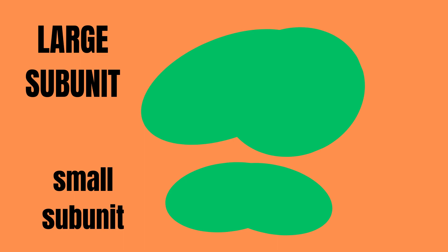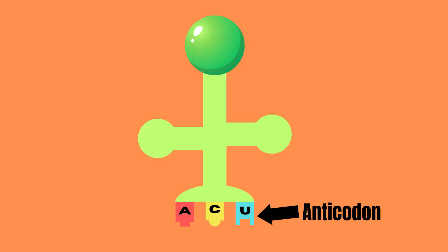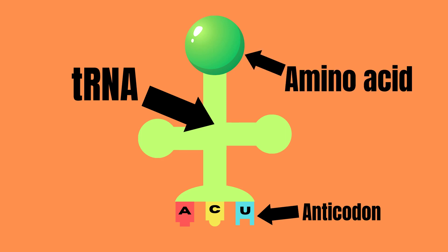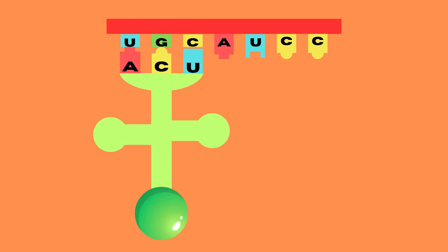The ribosome consists of a small subunit and a large subunit. Each triplet of mRNA is called a codon. Each codon codes for a specific anticodon, which in turn is attached to a tRNA, or transfer RNA. Also, each tRNA is covalently linked to a particular amino acid. In other words, each codon ultimately codes for a particular amino acid.